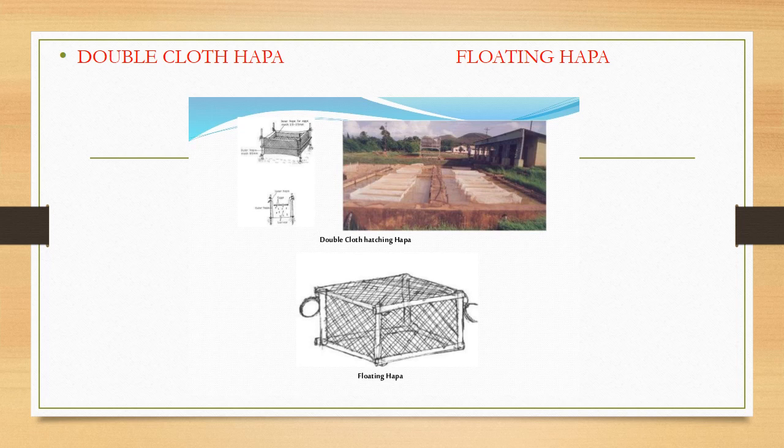Now, double cloth hapa and floating hapa. The double cloth hapa process was started in 1976. It has two rectangular hapas: an outer hapa and an inner hapa. The outer hapa is made of close-meshed cotton cloth and the inner hapa is made of round-meshed mosquito netting cloth. The depth of both hapas is different — the inner hapa is 30 centimeters deep and its capacity is 75,000 to 1 lakh eggs.